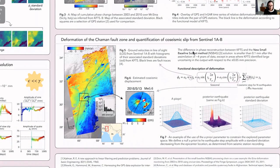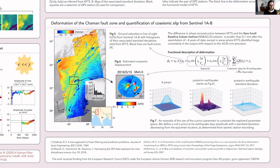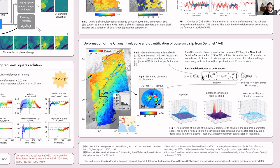Let us now look at the example of the Chaman Fault Zone in Afghanistan and Pakistan. On the left, you have a map of ground velocities with its associated histogram of uncertainty — the y-scale is logarithmic, meaning the wide majority of pixels have uncertainties smaller than 4.5 mm per year. On the right, you have the full expression of the functional description of deformation: we use a velocity A1, a seasonal term, and an amplitude of step function centered on earthquake timing to quantify co-seismic displacement. There is an example for a magnitude 5.6 event, where the co-seismic displacement is spatially limited by the shape of the a priori.